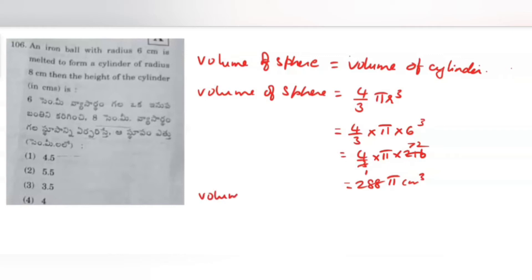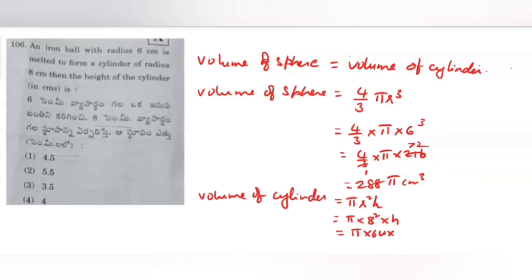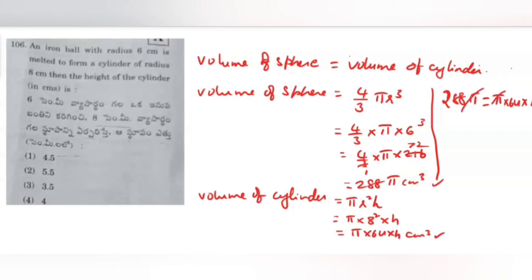Volume of cylinder is given by the formula pi r squared h. Here the radius of the cylinder is 8 cm. So: pi into 8 squared into h, which is pi into 64 into h. Now equating volume of sphere with volume of cylinder: 288 pi equals pi into 64 into h. Pi cancels on both sides.